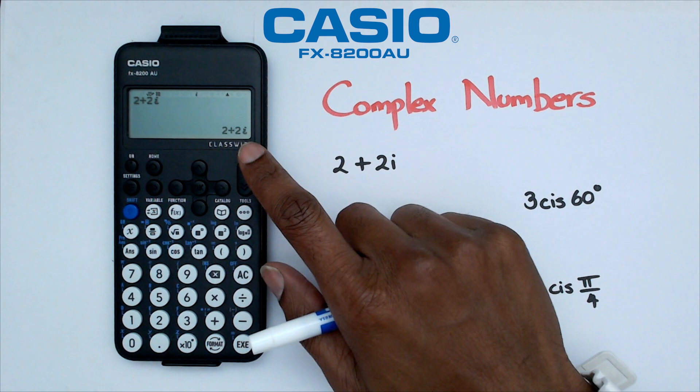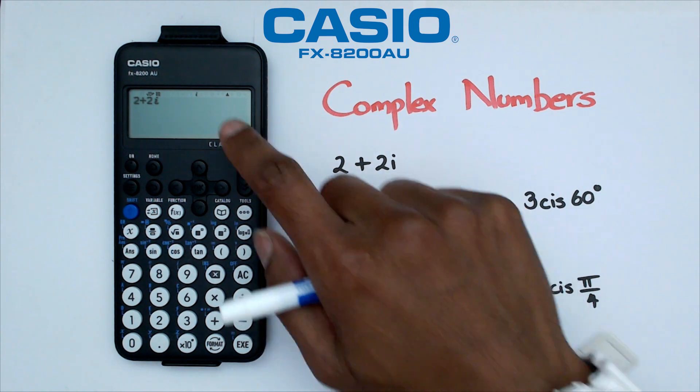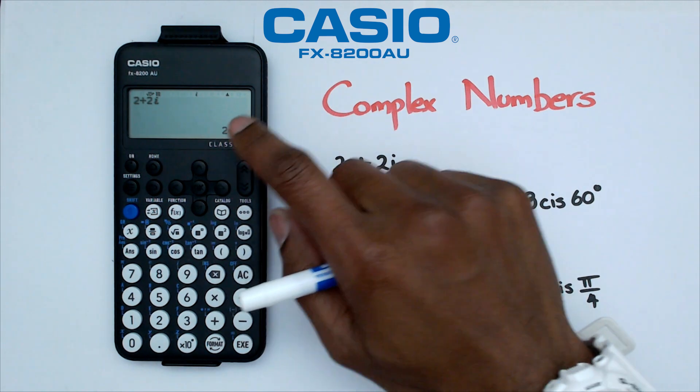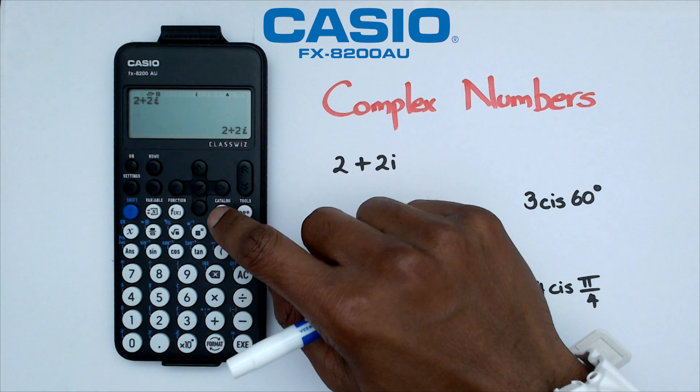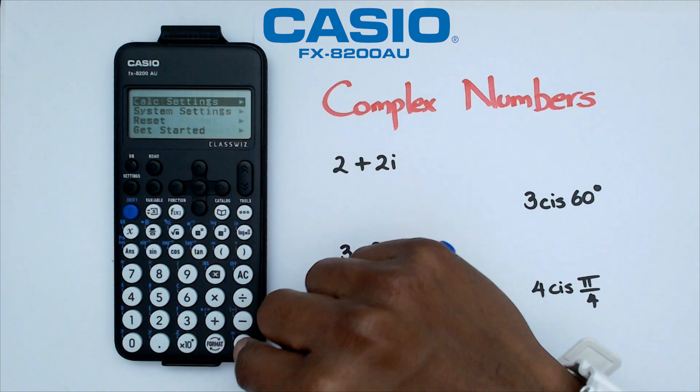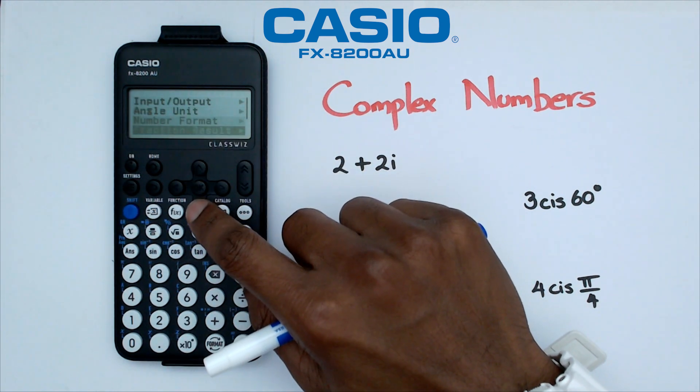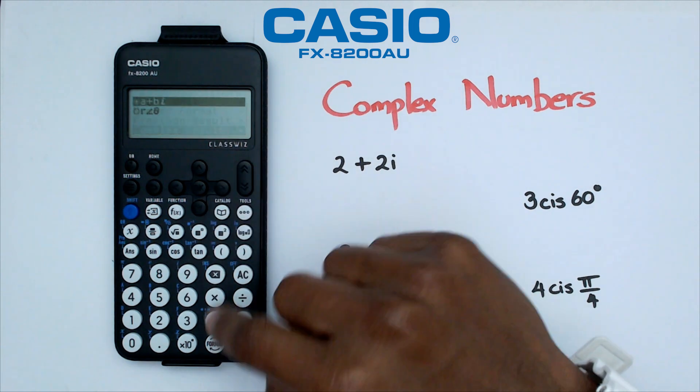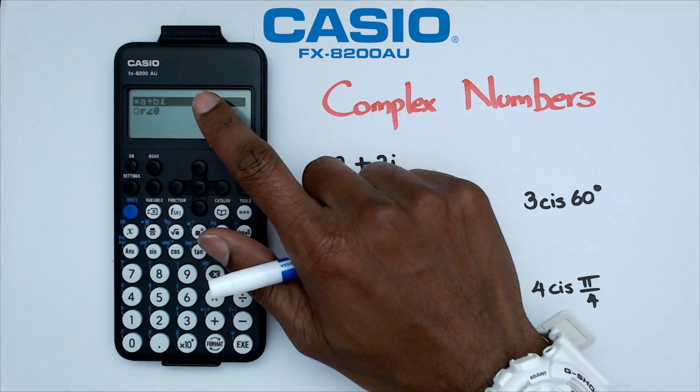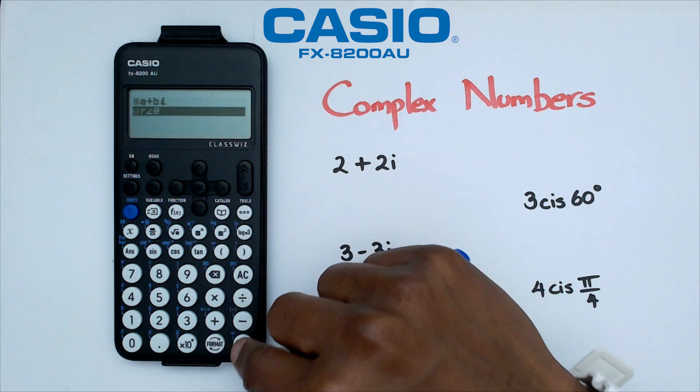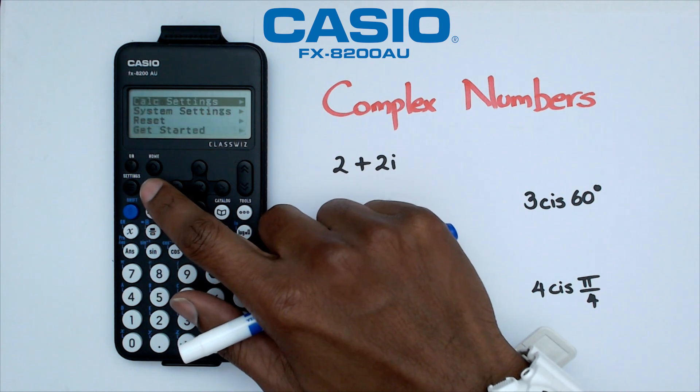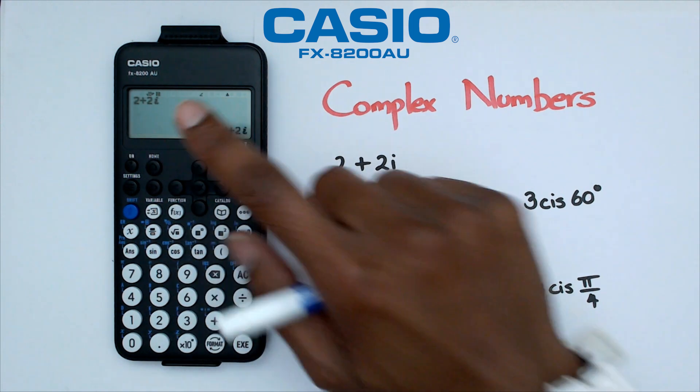And I would like to change this to polar form. So what I need to do is click on settings and go into calc settings and navigate down to complex result. And I want to change from rectangular form to polar form. And by doing this, if I go back and I do 2 plus 2i and press equals,